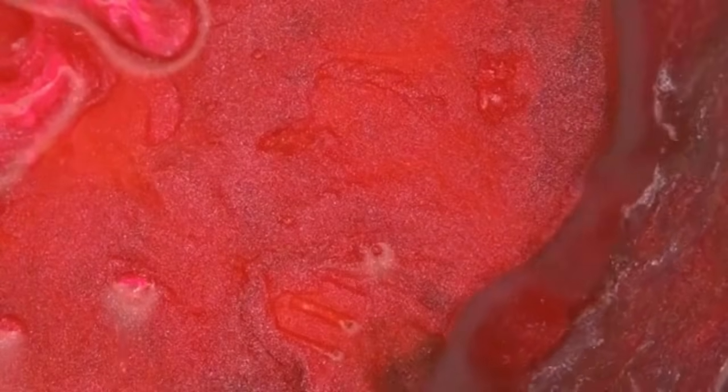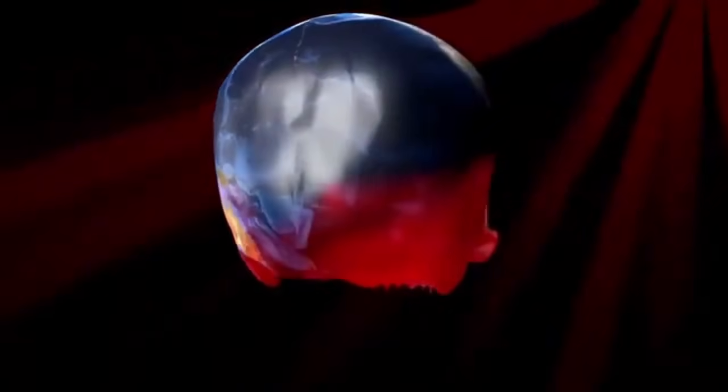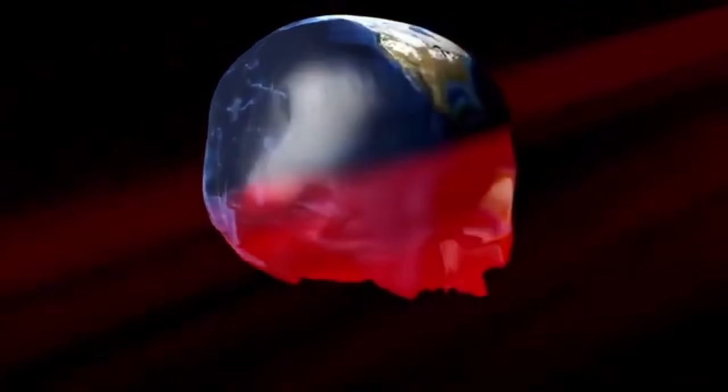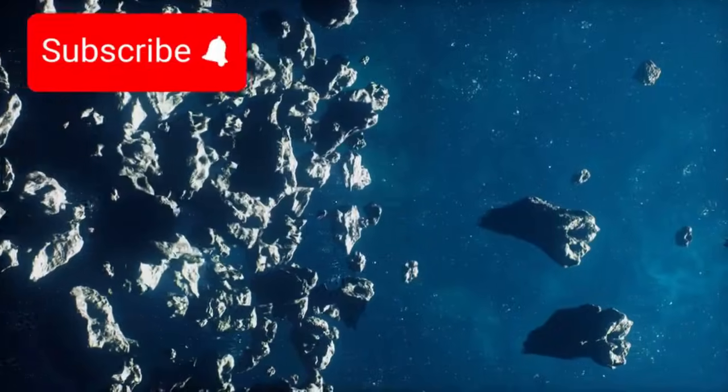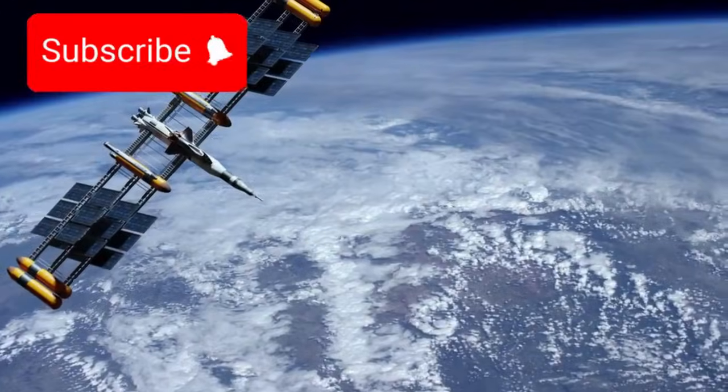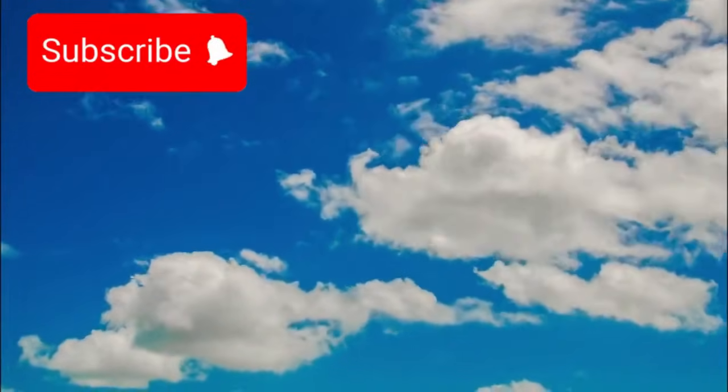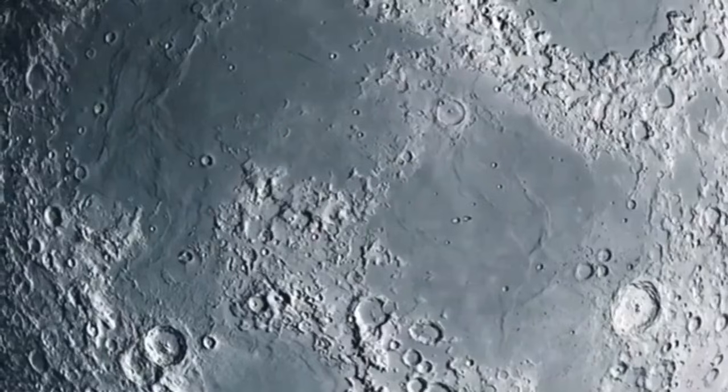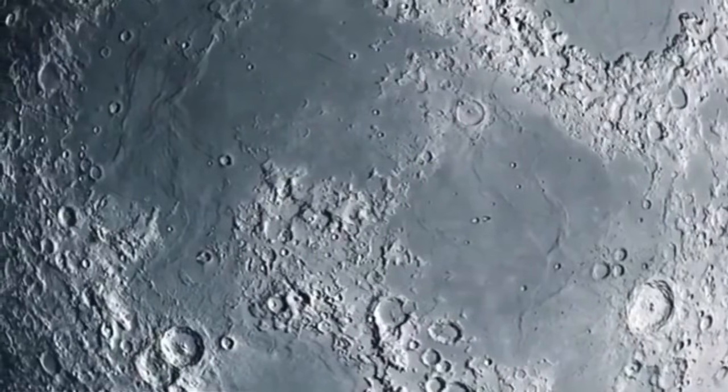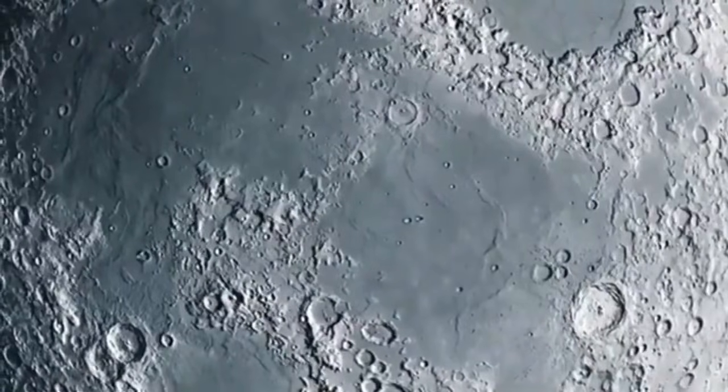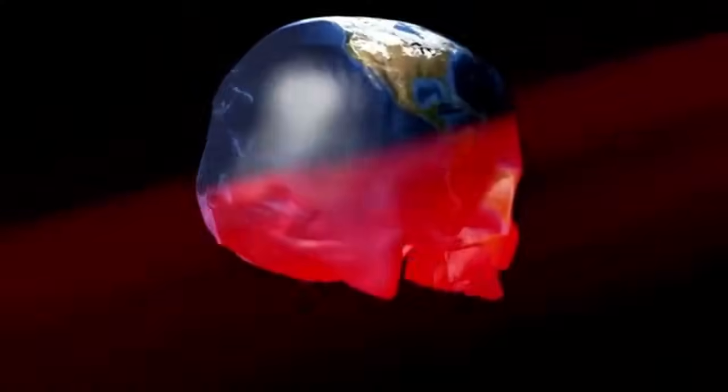Think about that for a moment. Pluto has basically figured out how to create its own climate system using almost no energy from the sun. It's like watching someone build a roaring campfire using nothing but a few matches and some wet wood. It shouldn't work. But somehow Pluto has mastered this incredible atmospheric balancing act that scientists are calling completely unique in our solar system.